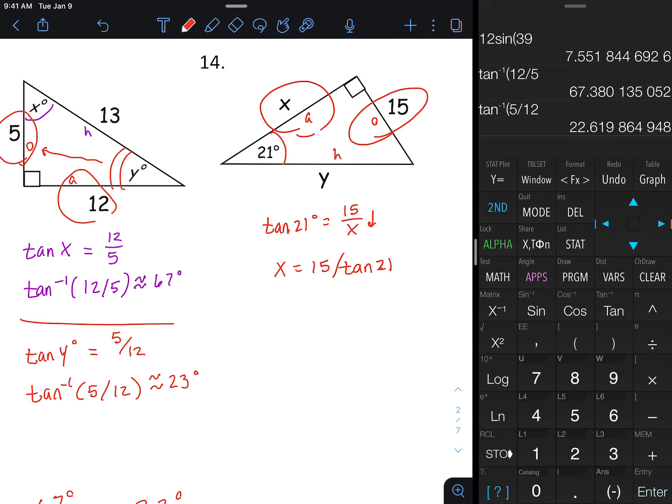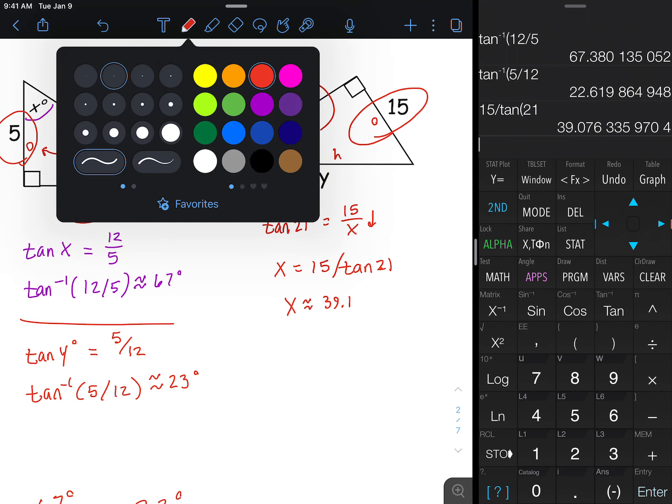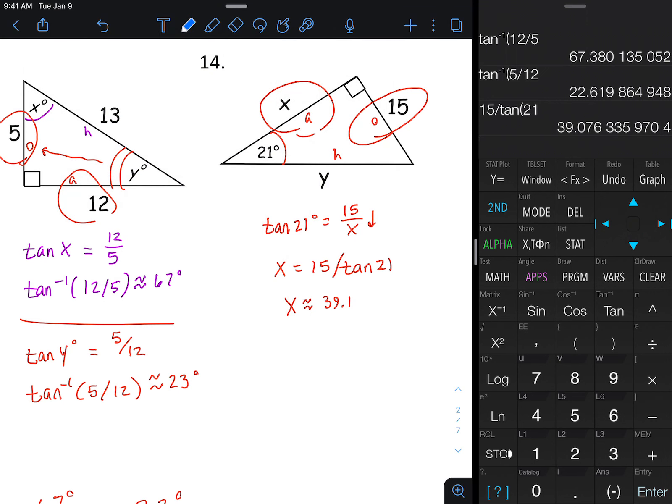You can cross multiply and divide, you can see that process I think on number 7 earlier if you want full steps right there. But I usually use this little shortcut here, 15 divided by tangent of 21, roughly 39.1 after you round properly.